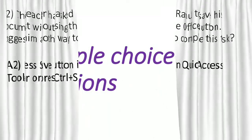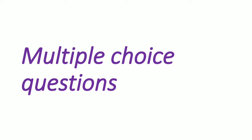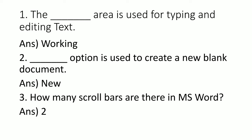Now, page number 68. Multiple choice questions. First question: The dash area is used for typing and editing text. Which area is used for typing and editing? The options given in the textbook are: working, desktop, document.